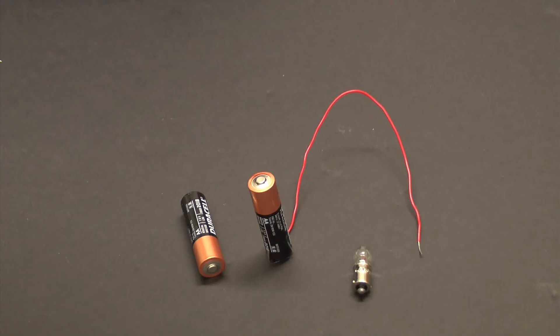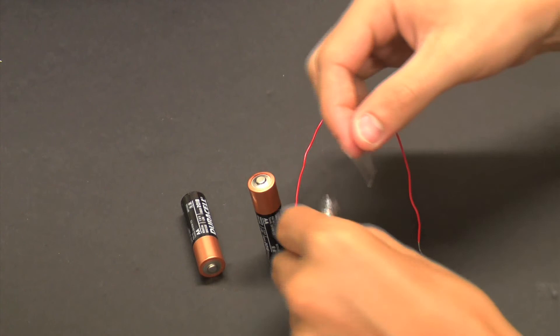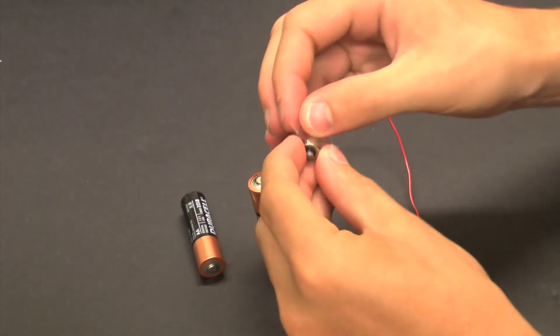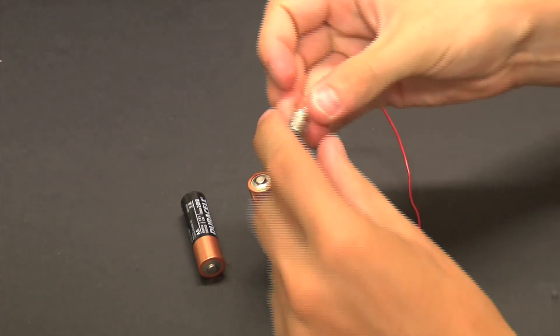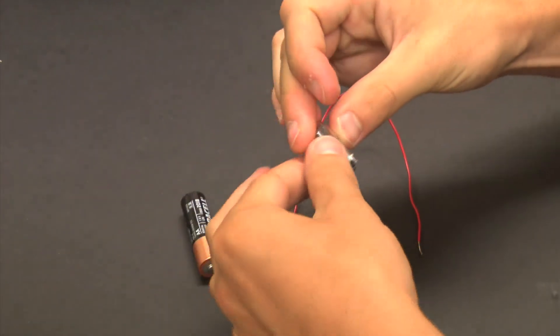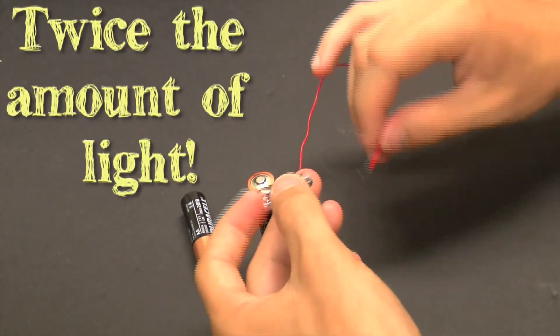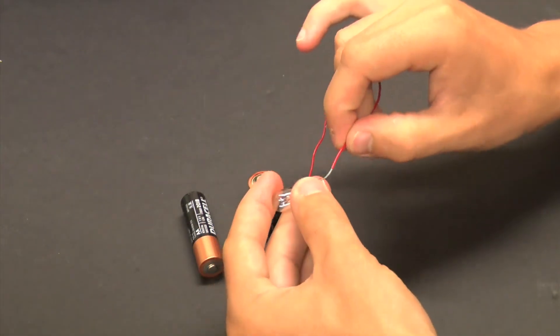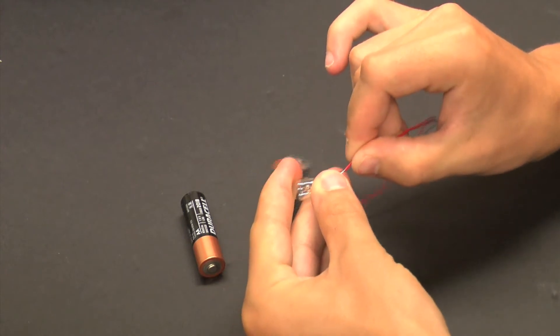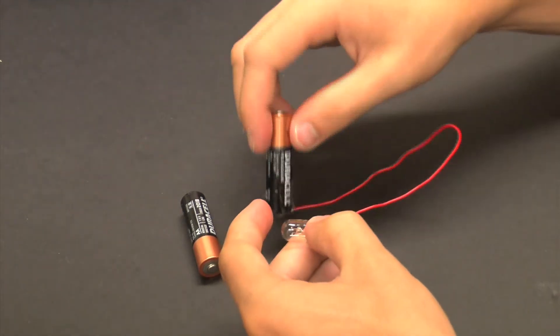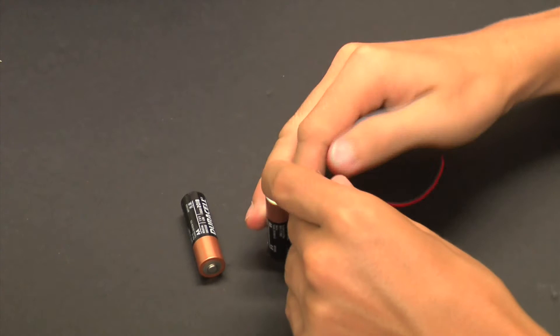If the students have time, have them incorporate a second battery into their circuit. The students must connect the positive terminal of one battery to the negative terminal of the second battery. This will make the light twice as bright. This may be easier if the students have partners to help them construct the circuit. If they don't, they may need to use tape.